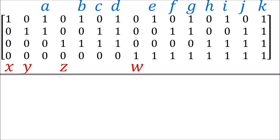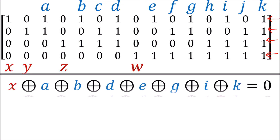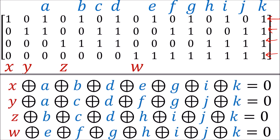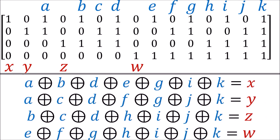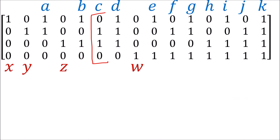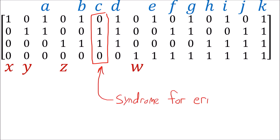Each row in the parity check matrix describes one of the parity bit equations, giving us the instructions on how to compute the parity check bits. And each column of the parity check matrix gives us the syndrome for a particular error type, so when we see a given syndrome, we know exactly how to fix the error.